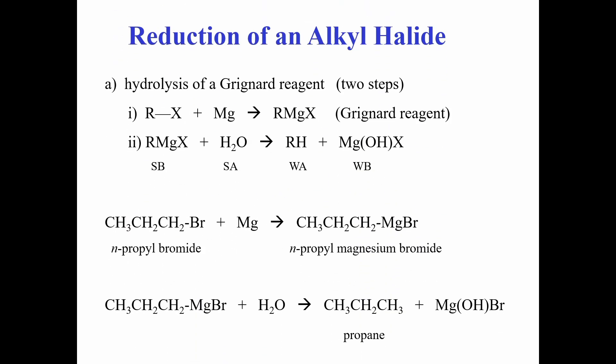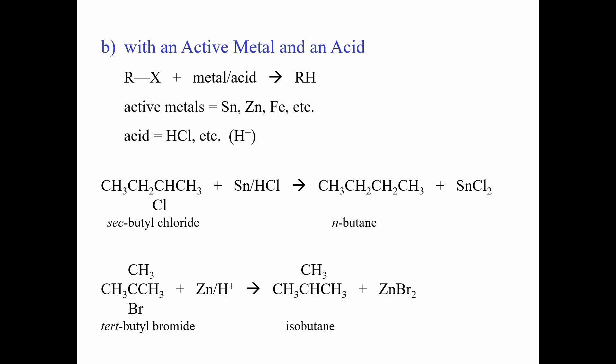A method of synthesizing alkane in the lab is by reduction of alkyl halides. First, formation of Grignard reagents by reacting alkyl halide with magnesium metal — the Grignard reagent is then hydrolyzed to form alkane. Secondly, it is the reaction of alkyl halide with a metal and acid. For example, secondary butyl chloride reacted with tin or zinc in HCl will form an alkane — in this case, butane.